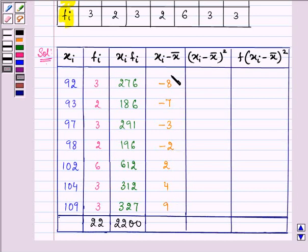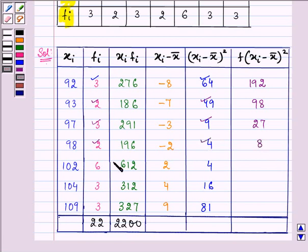Now what we need to do is we need to square them and their square is 64, 49, 9, 4, again 4, then we have 16 and the square of 9 is 81. Now we need to multiply with fi, so we need to multiply 3 with 64 and we have 192 on doing that, 2 with 49 we have 98 and so on. 3 into 9, 27, 2 into 4, 8, 6 into 4, 24, 3 into 16, 48 and 3 into 81 is found out to be 243.